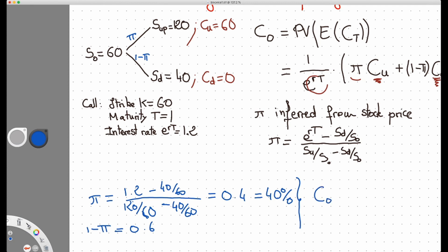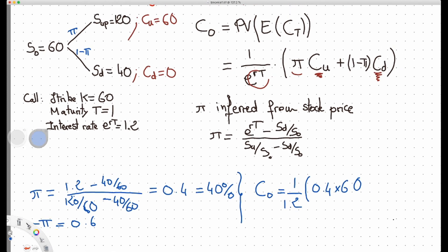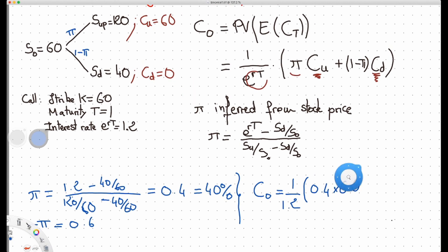C naught is equal to 1 over the interest rate, 1 over 1.2, times pi, so 0.4, times the payoff in the upstate, which is 60, plus—we're running out of space here, let's move this a little bit.